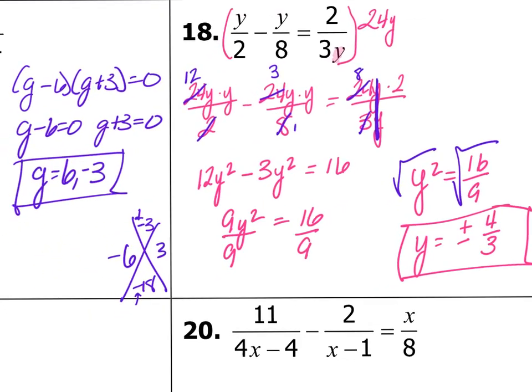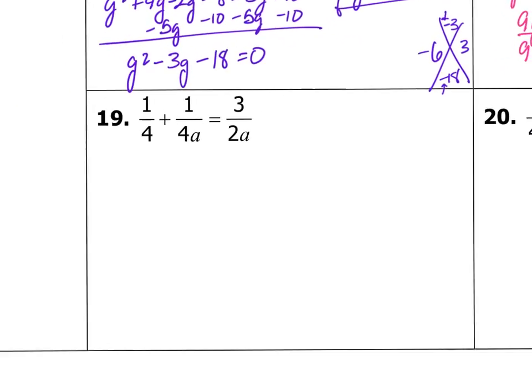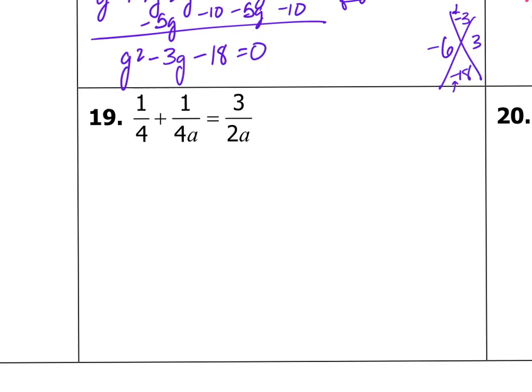Okay. So let's go ahead and go on to number 19. Again, I don't have a common denominator. I don't have two denominators that are the same. I'm not going to add them together to make a proportion. I'm just going to go ahead and multiply by my common denominator. I think my common denominator is going to be 4a because 4 and 2 both go into 4 and then a goes into a. So now I'm going to multiply.